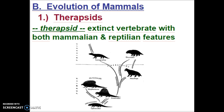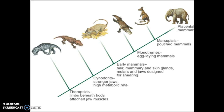On the evolutionary tree of life, the closest relatives to mammals are the reptiles, and there is fossil evidence of animals called therapsids — extinct vertebrates with a mix of mammalian and reptilian features, serving as a cross-bridge between the two groups. Here we have a cladogram showing the timeline of traits from ancient to modern mammals, moving from limbs beneath the body like a reptile, to a higher metabolic rate, to developing hair, mammary, and skin glands — giving us our three classes: monotremes, marsupials, and placental mammals. This has been Chapter 30, Part 2 on Mammals.